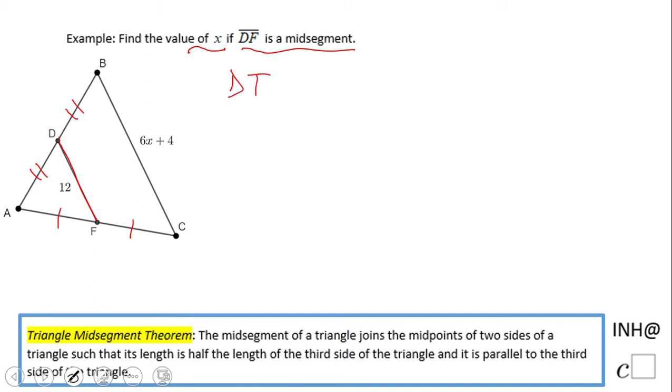And what is cool about this midsegment? This midsegment is half of the third side, which is BC in this case. Or BC is twice this midsegment.